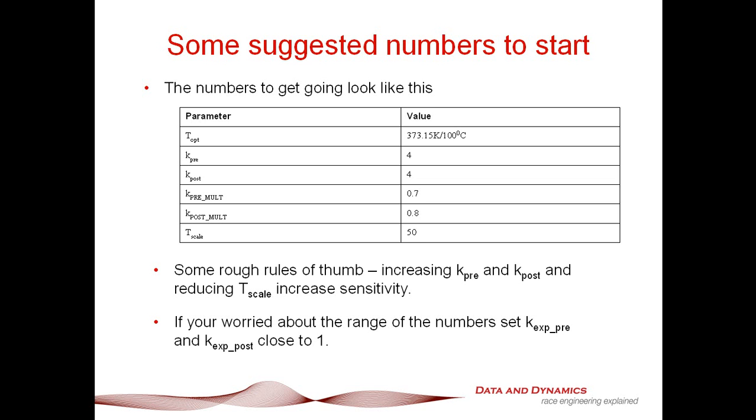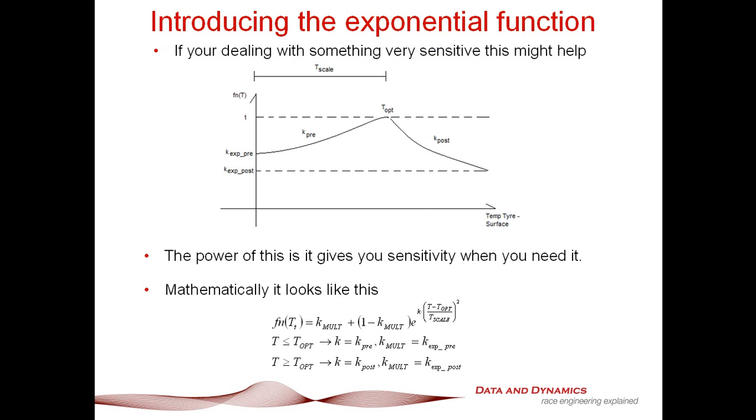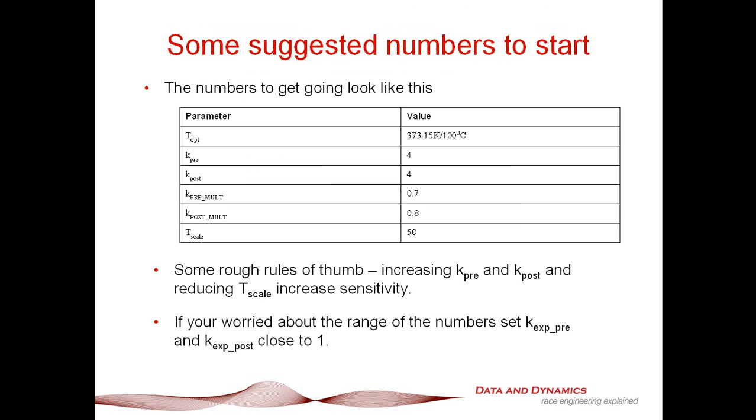Rough rules of thumb, as we discussed before, increasing k pre and k post and reducing t scale really increases the sensitivity. What it does is it makes this curve really sensitive around the t optimum area. So as you're making setup changes, you're really going to see some big differences there.